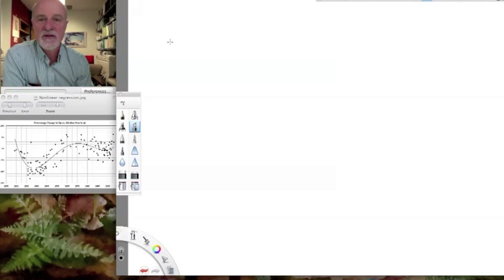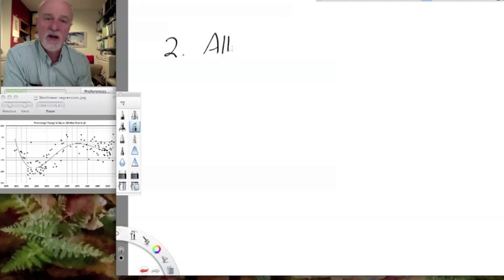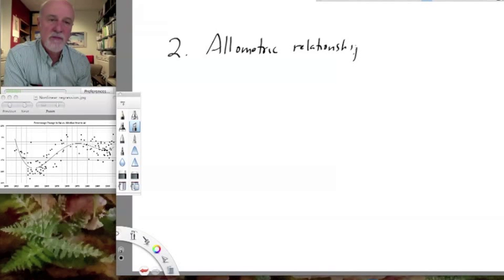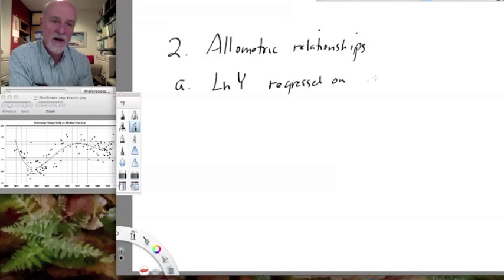Second kind of use of nonlinear regression is the study of allometric relationships. Allometric relationships are just mathematical quantities relating, for example, two traits to each other. It doesn't have to be just two. It could be more than two, but we're going to talk about two here, and we're going to just talk about describing those relationships. For example, they may well be nonlinear. They often are, and we could do a linear regression of ln y regressed on x. So how does that help?